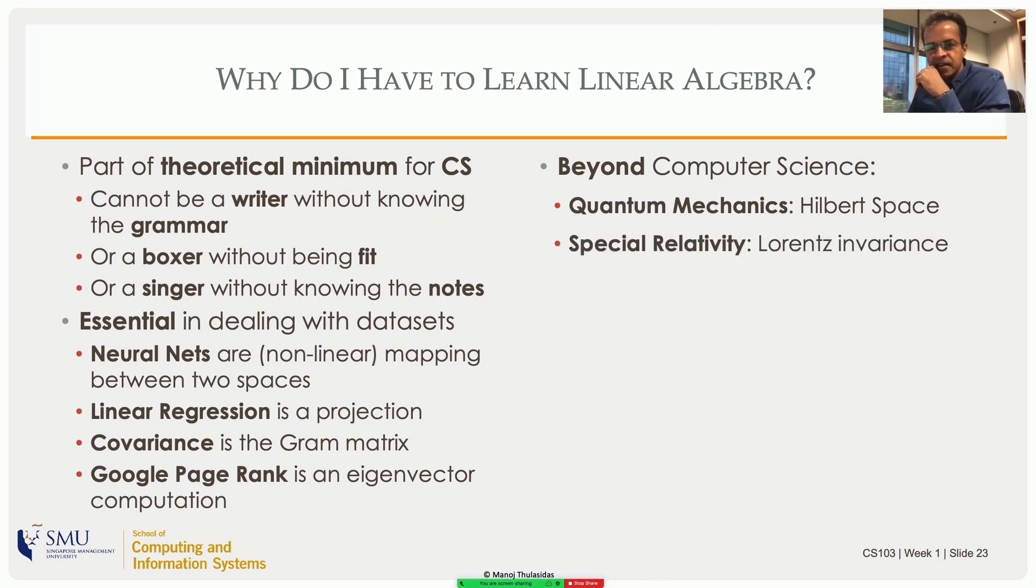If you look at Einstein's theory of relativity, the formulation of that also is basically just linear algebra. Later on in this course, we will talk about rotation matrices in three dimensions. Special relativity is basically a rotation in four dimensions: the spatial dimensions x, y, z and time. It becomes not the normal Euclidean space that you deal with, but it is called a Minkowski space. It's a different kind of space, but the mathematics is the same. Nothing complicated there. The physical interpretations might be complicated, the intuition might be difficult to follow, but the mathematics is actually quite simple.